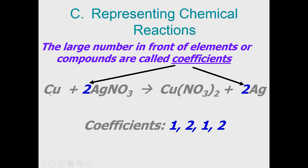For example, this equation tells you that one unit (or one mole) of copper added to two units of silver nitrate forms one mole of copper nitrate and two units of silver. If I asked you to list the coefficients, anytime there is no number written, that's an understood one. So the coefficients here are: 1, 2, 1, 2.